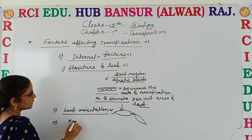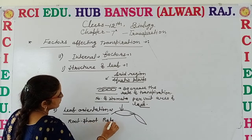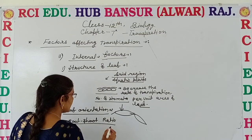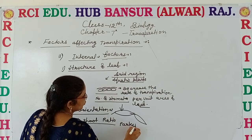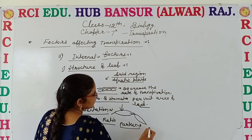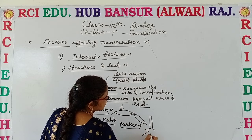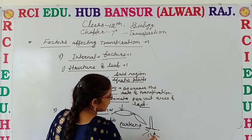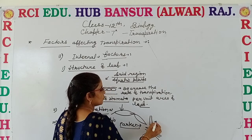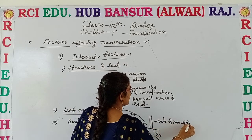The third internal factor is root-shoot ratio. Parkin first explained about root-shoot ratio — how much the ratio of root to shoot is. It shows how much root is inside the soil and what is the length of the stem. This also affects the rate of transpiration.